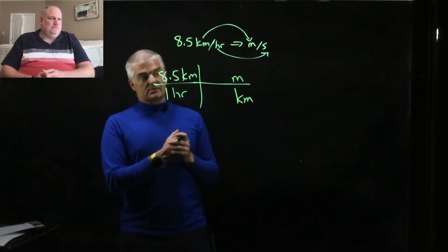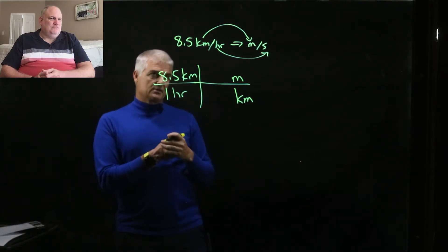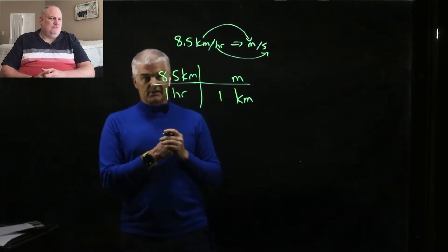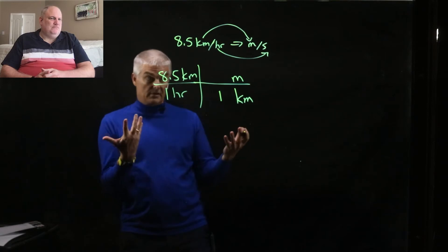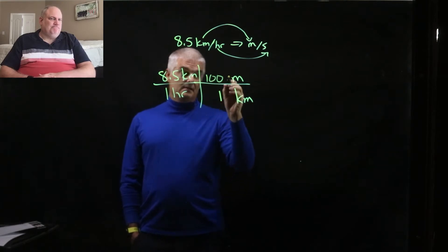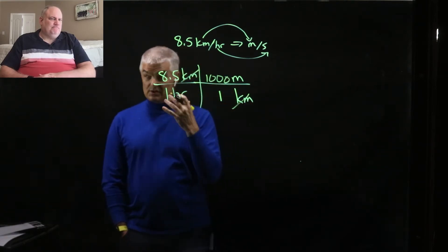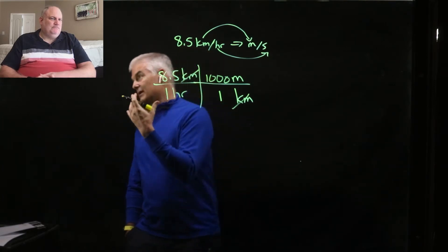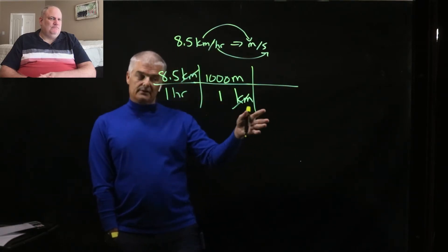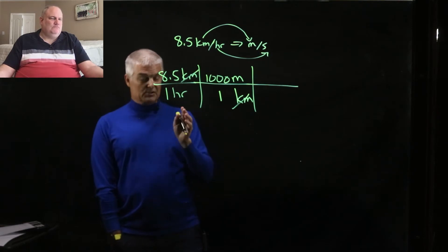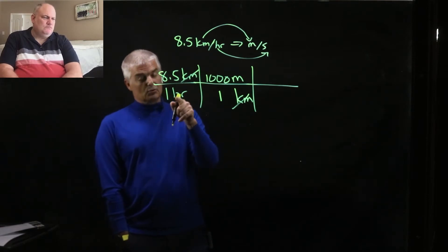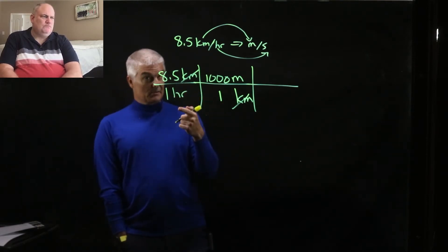Kilometers to meters. Here's a rule I like: when doing metric to metric, put the one next to the bigger unit. The biggest unit is a kilometer, so he gets a one. There are a thousand meters in a kilometer, so now the kilometers cancel. But I'm not just interested in converting kilometers to meters — I want to convert the hours into seconds. Notice that the hour is on the bottom, so rule number two says: if the unit's on the bottom, you cancel up.